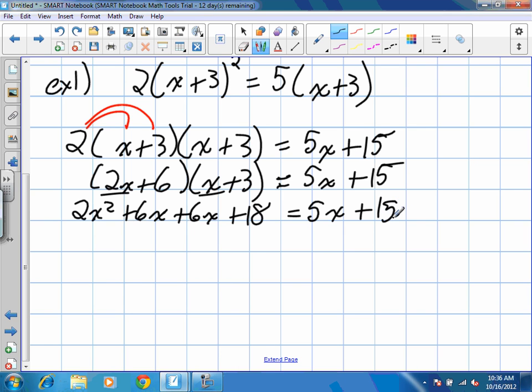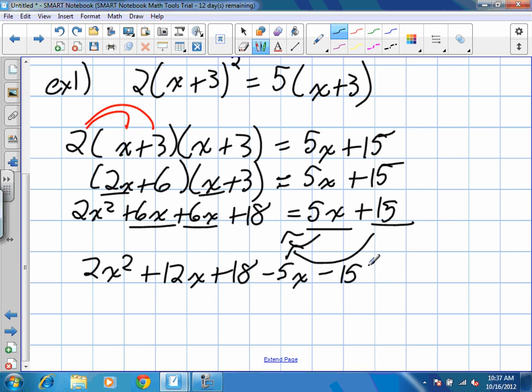We're going to collect our like terms. So we're left with 2x squared plus 12x plus 18. And now what I'm going to do is I'm going to move the 5x and the 15 to the other side of the equation. So this becomes subtract, negative 5x and minus 15, or negative 15. It's equal to 0. Remember, our goal was to set the equation equal to 0 so that we can factor and solve.